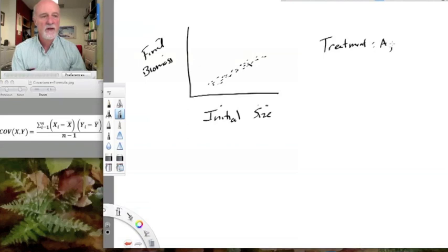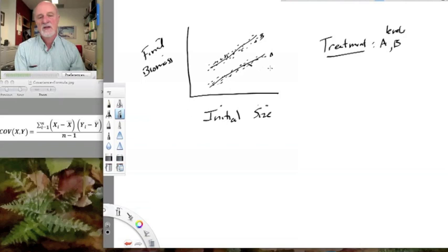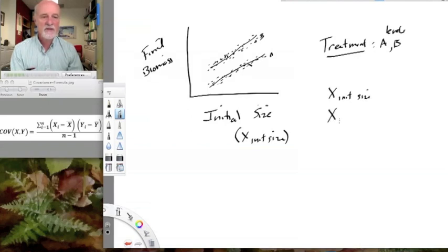But we also have a treatment on top of that. So some factor that has levels A and B. And those levels A and B may produce an effect on final biomass as well. So we have two levels. Here's A and here's B of our treatment. And they're producing an effect on final biomass above and beyond the initial size effect. So we can make initial size a covariate in this analysis.